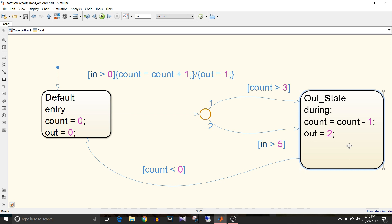The decrementation of count will occur and output equal to 2 is a during action. When count less than 0 condition becomes true, it goes from out state to default state. That's how this chart works.